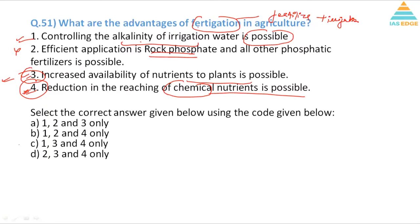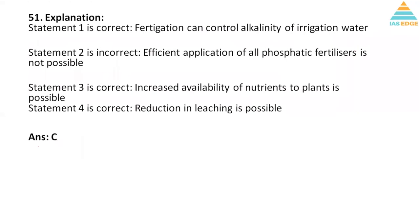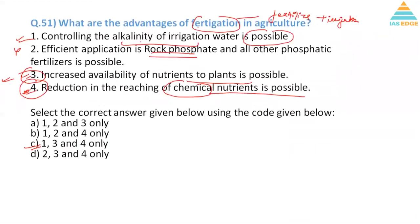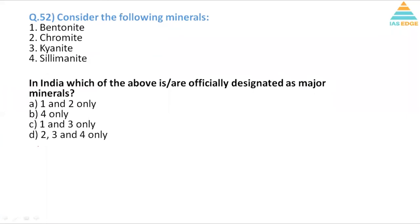So three is correct and four is correct, which means two is something which is a little dicey. Hence the answer here is 1, 3, 4, so C is the right answer. It's a little technical question, not everybody would have been able to solve them. I would say it's a difficult question, a tough question.